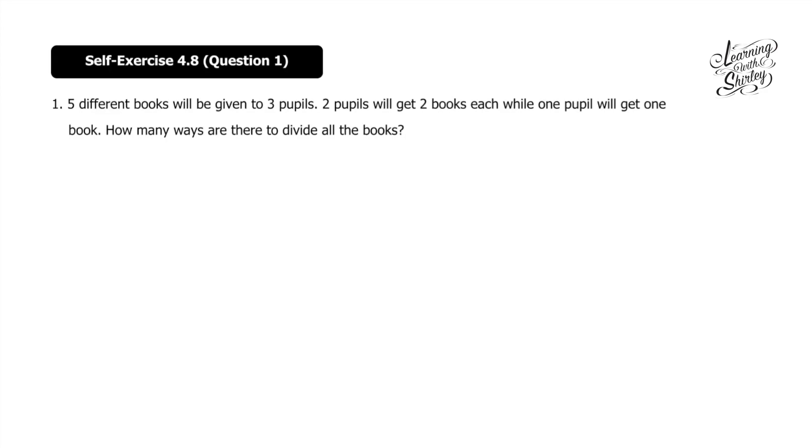Five different books will be given to three pupils. Two pupils will get two books each, while one pupil will get one book. How many ways are there to divide all the books? So we have three pupils here: first, second, and third. We're going to use NCR.